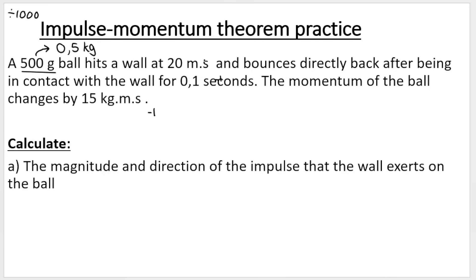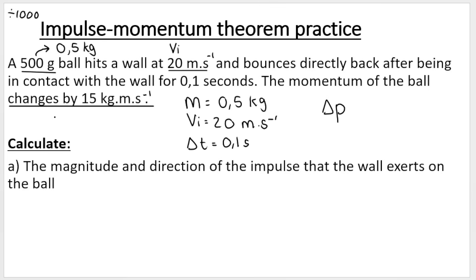That ball hits a wall at 20 meters per second — that is my initial velocity, 20 meters per second towards the wall — and directly bounces back after being in contact with the wall for 0.1 seconds. And the momentum of the ball changes by 15 kilograms meters per second. When we deal with physics questions, we need to choose a positive direction. I'm going to choose the initial direction — towards the wall — as the positive direction.